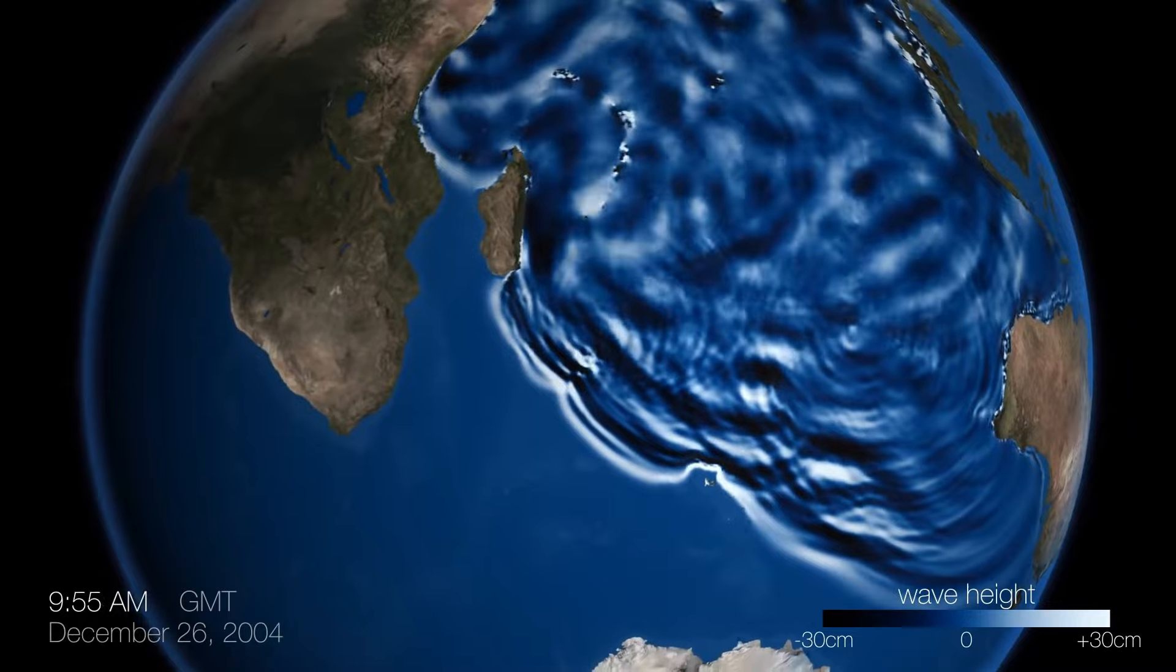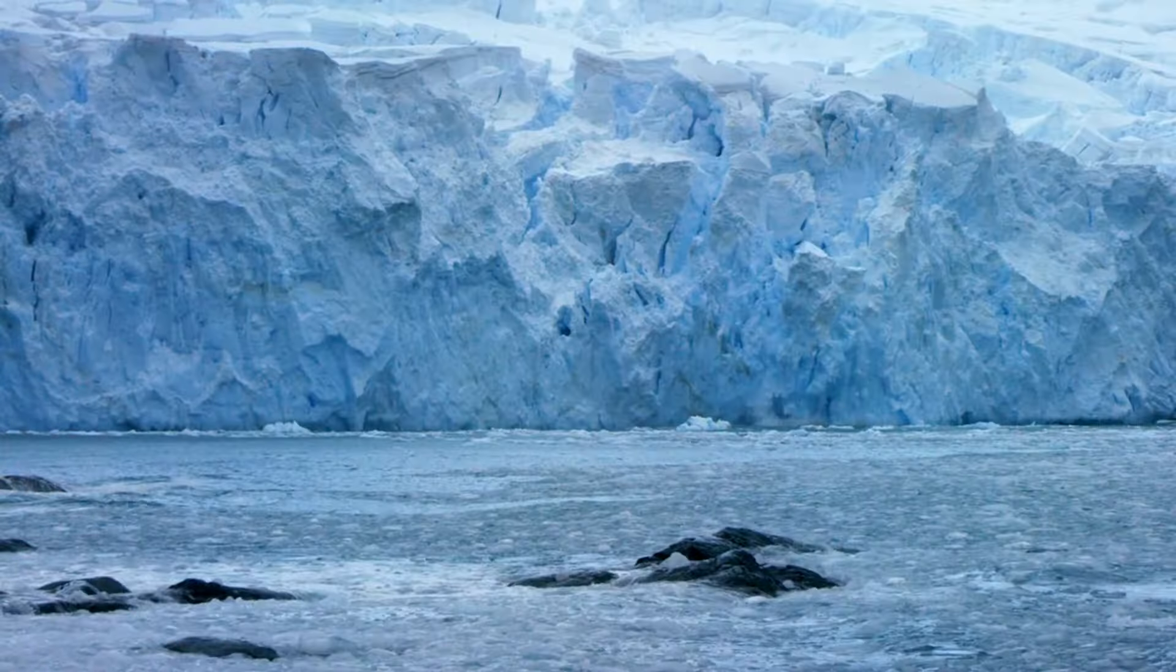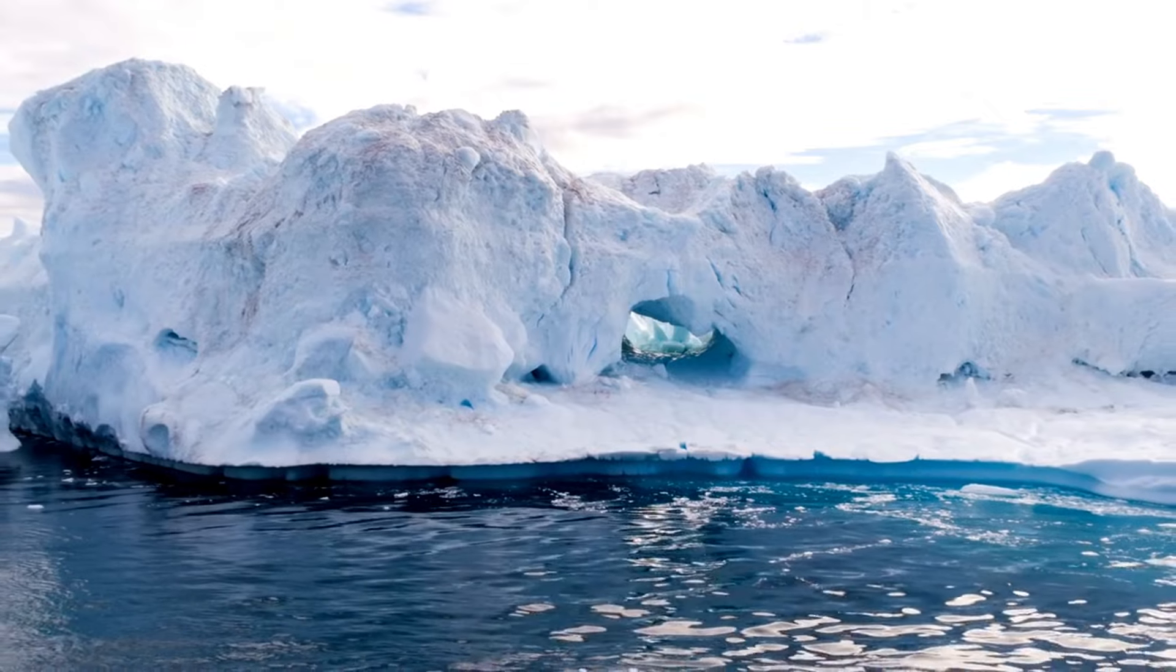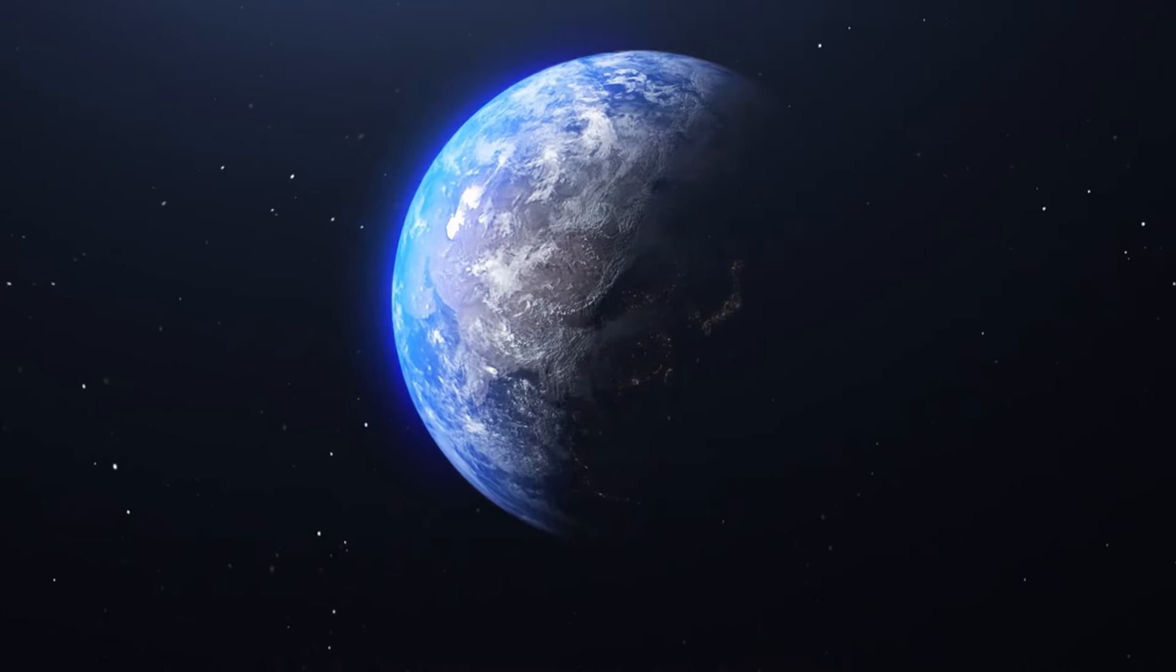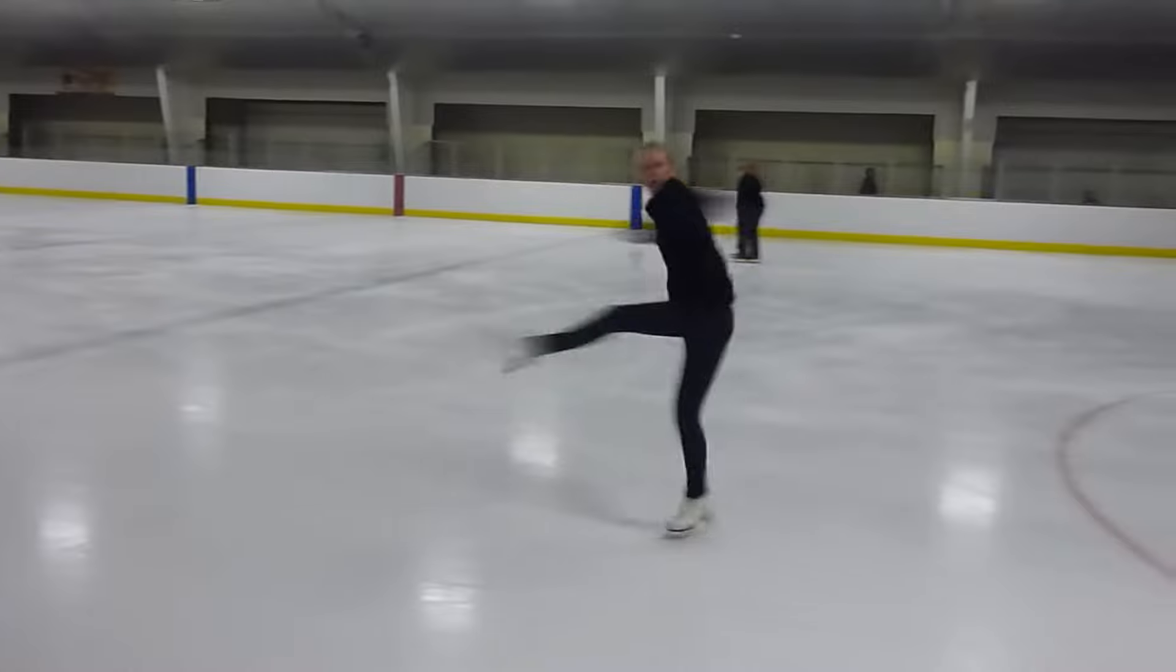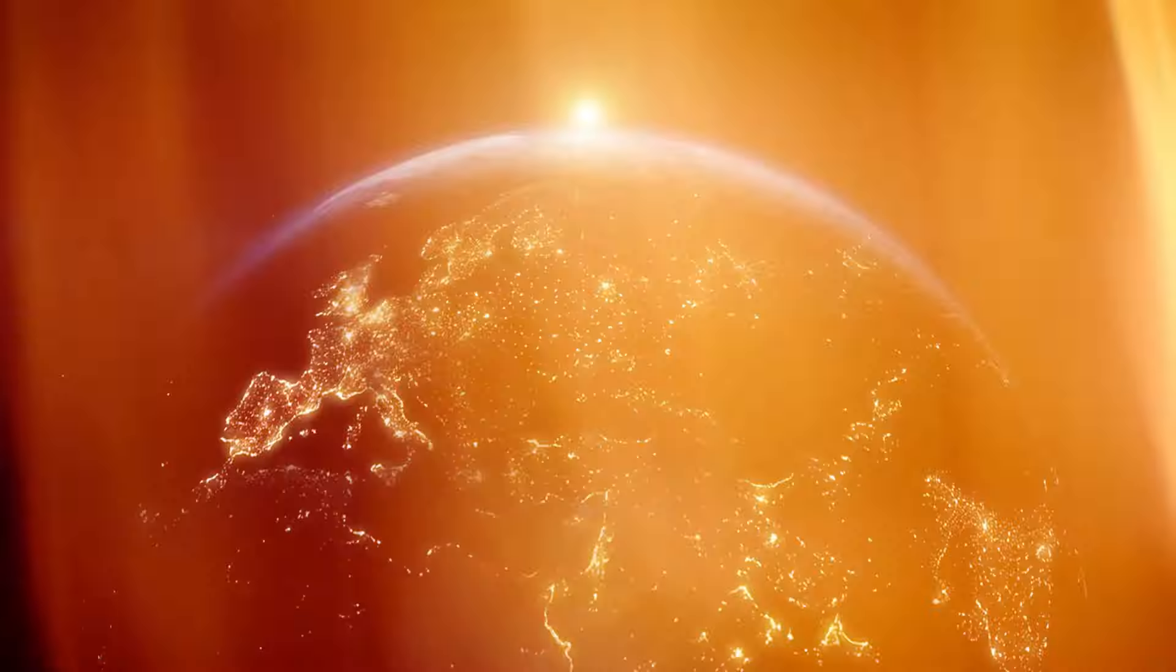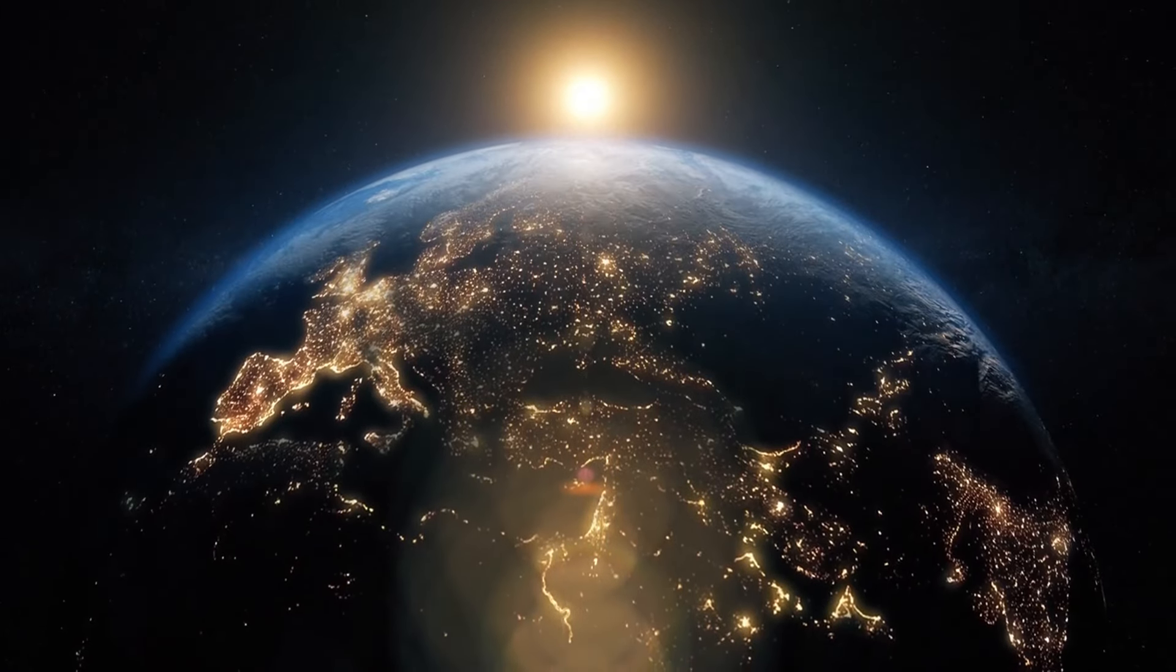Another factor is the melting of glaciers and ice caps due to global warming. As ice melts and water redistributes, the Earth's mass distribution changes, which can lead to variations in its rotation. This redistribution of mass is similar to a figure skater spinning faster when they pull their arms in closer to their body.